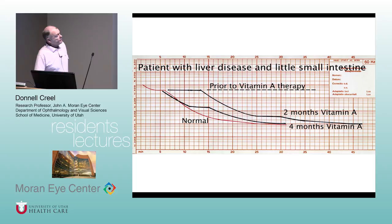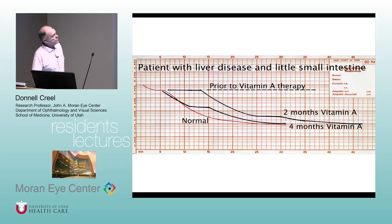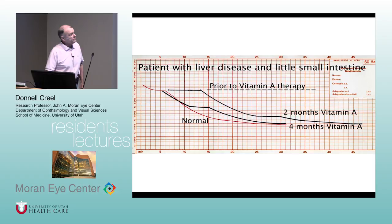A patient with liver disease and very little remaining small intestine — who could not absorb well — had essentially no night vision prior to vitamin A therapy. After two months and four months on vitamin A therapy, the dark adaptation curves progressively improved. He had a completely dysfunctional liver and was on the liver transplant list.